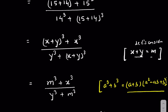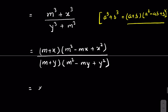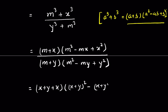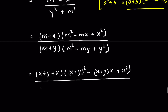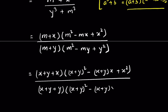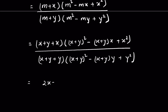Replacing m with (x + y): the numerator factor becomes (x + y + x) = (2x + y), and the bracket becomes (x + y)² − (x + y)x + x². The denominator factor becomes (y + x + y) = (x + 2y), and its bracket becomes (x + y)² − (x + y)y + y².